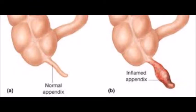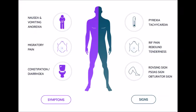Hyperesthesia, the psoas test, and the obturator test may also be present. Rovsing's sign: when the left iliac fossa is palpated, it produces pain in the right iliac fossa because of displacement of the colonic gas and small bowel coils impinging upon the inflamed appendix.